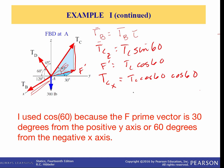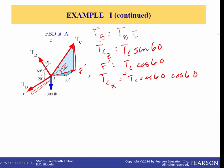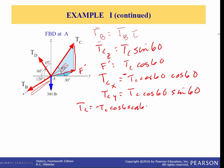TC sub Y in the Y direction equals F', which is TC cosine of 60 times sine of 60. We can now write TC as a Cartesian vector: it equals minus T_C cosine(60)cosine(60) in the I direction, plus TC cosine(60)sine(60) in the J direction, plus T_C sine(60) in the Z direction. That's T sub C as a Cartesian vector.